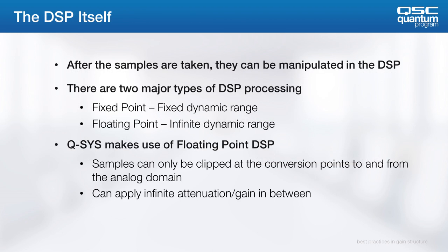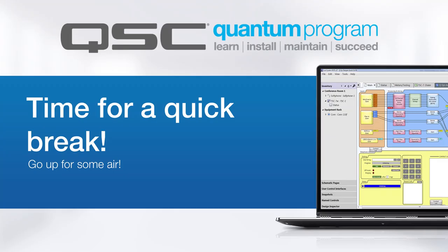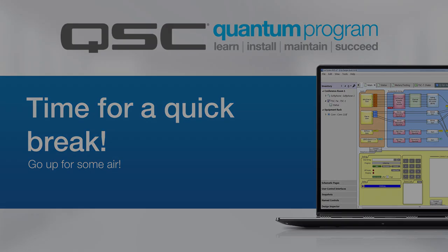Of course, after we take samples, we can do anything we want. Q-SYS is a floating point DSP, which means that I can apply an infinite amount of gain and attenuation. The alternative would be a fixed point DSP, which means that introducing gain beyond a certain amount of dynamic range will start to introduce error. In Q-SYS, you can only clip samples at the conversion points to and from the analog domain. However, you can apply infinite attenuation or gain. All right, let's take a break right there and we'll come back for the next section.